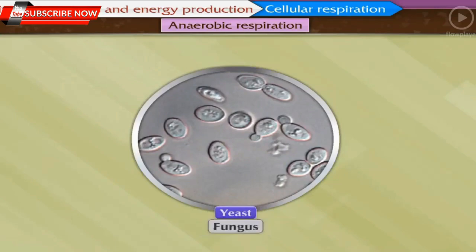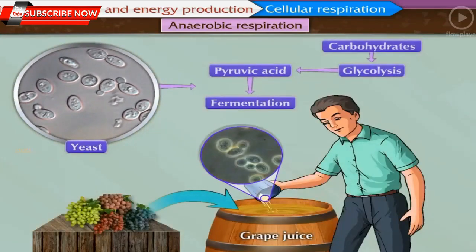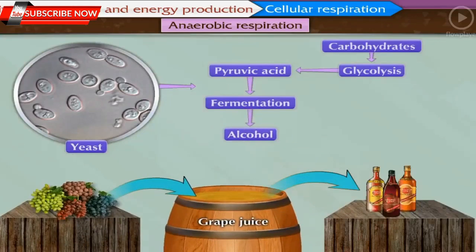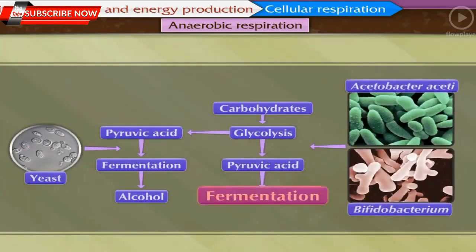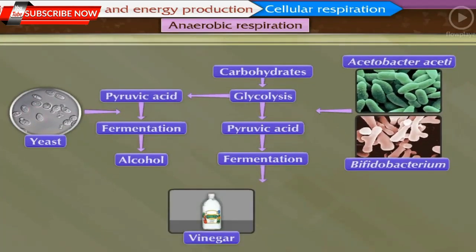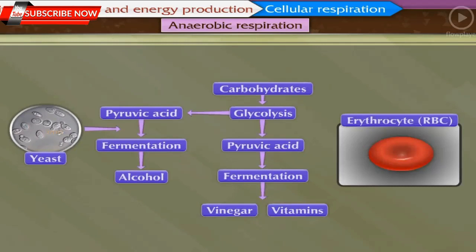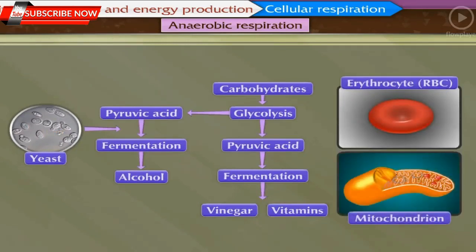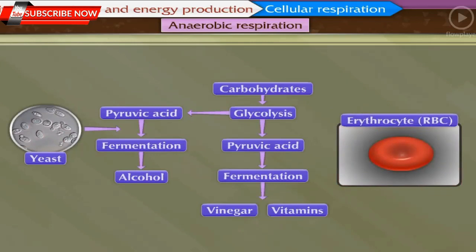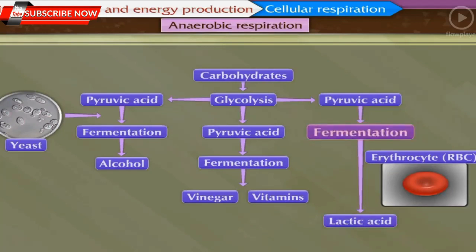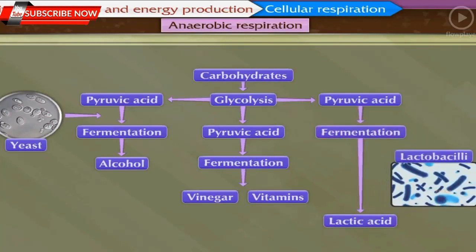Yeast, a type of fungus, carries out fermentation on pyruvic acid and converts it into alcohol. Similarly, various microbes convert pyruvic acid into different products such as vinegar and vitamins. Red blood cells (erythrocytes) do not have mitochondria; therefore, RBCs entirely depend on anaerobic respiration for energy production, and lactic acid is produced by fermentation. Lactobacilli, bacteria present in milk, also convert pyruvic acid into lactic acid after fermentation.